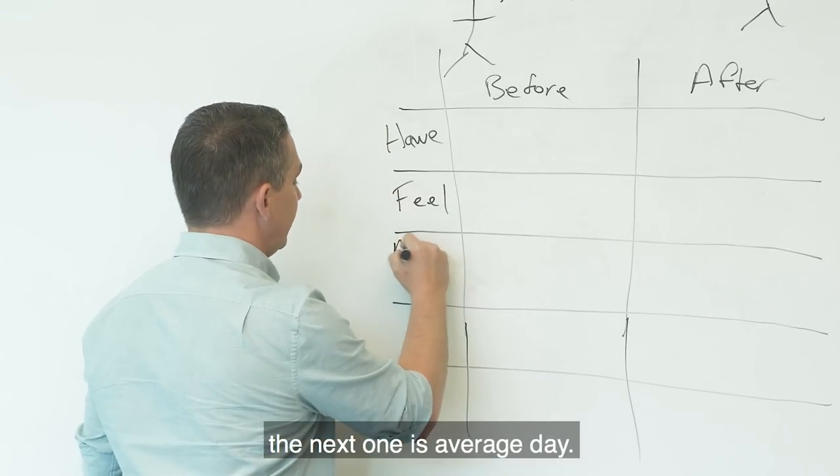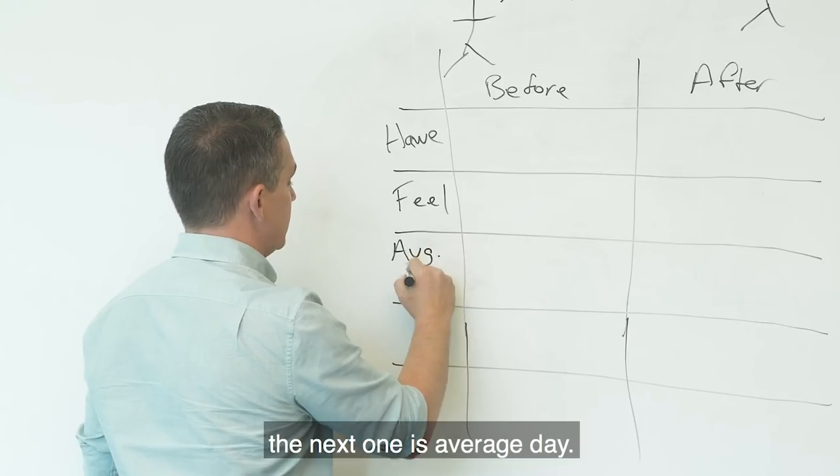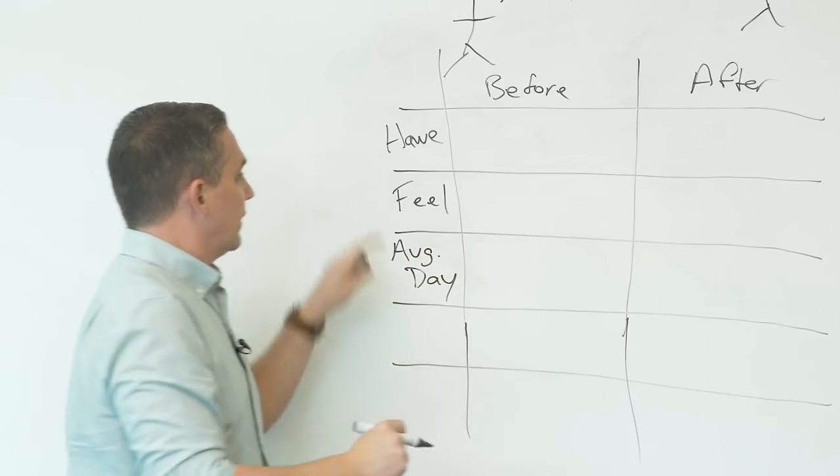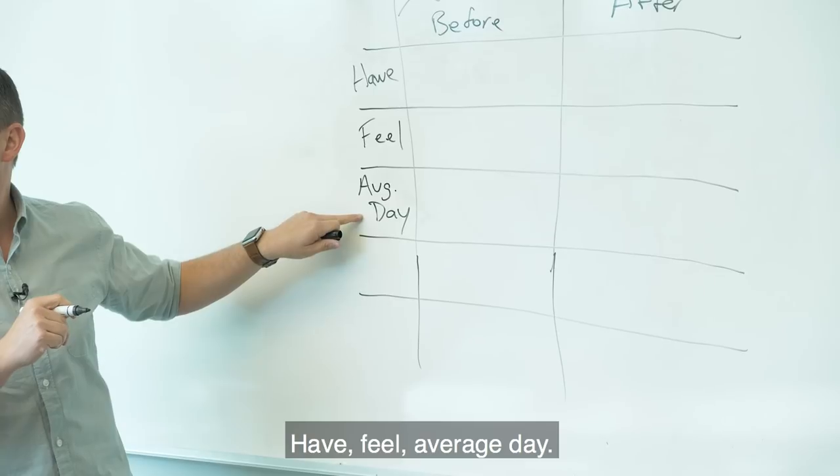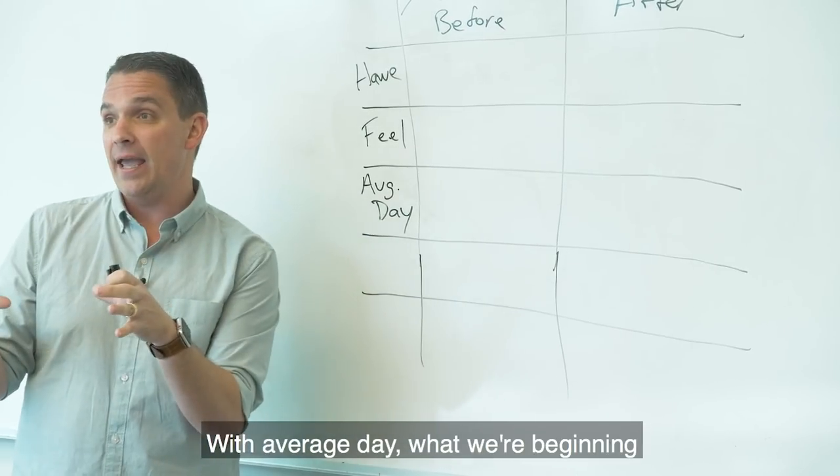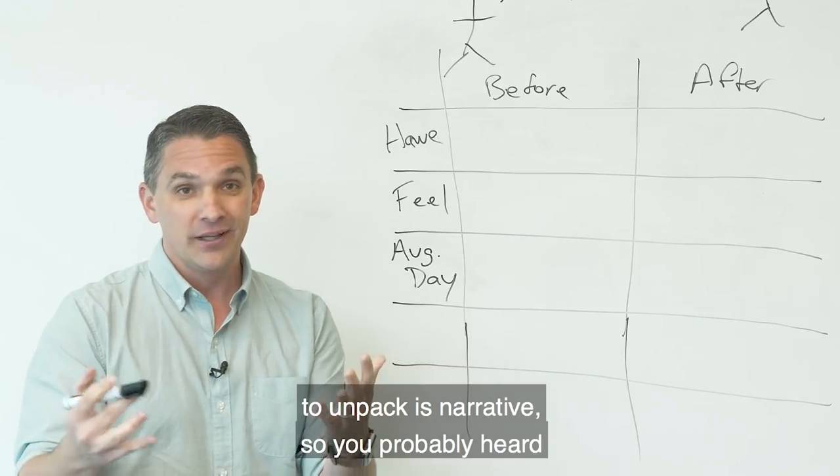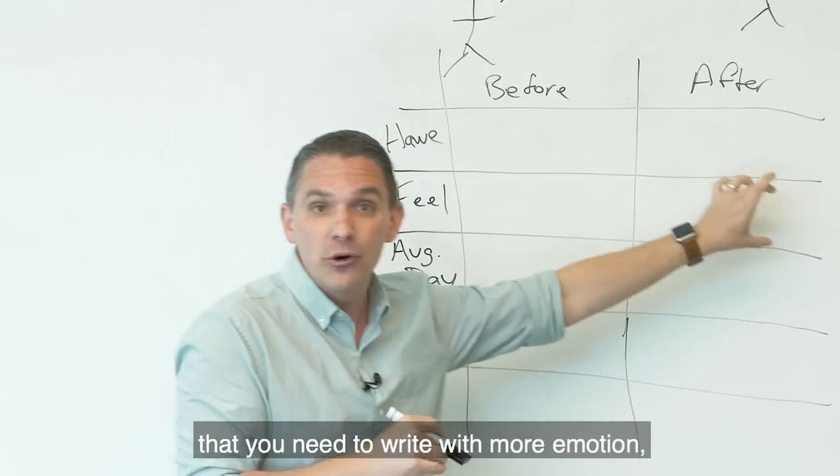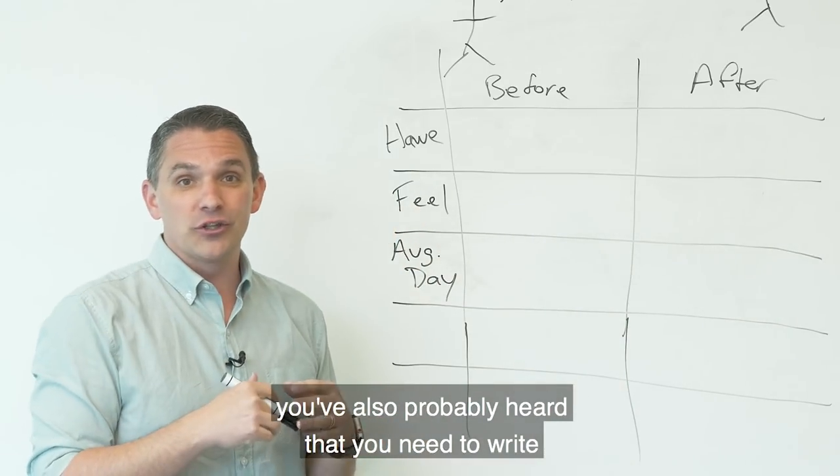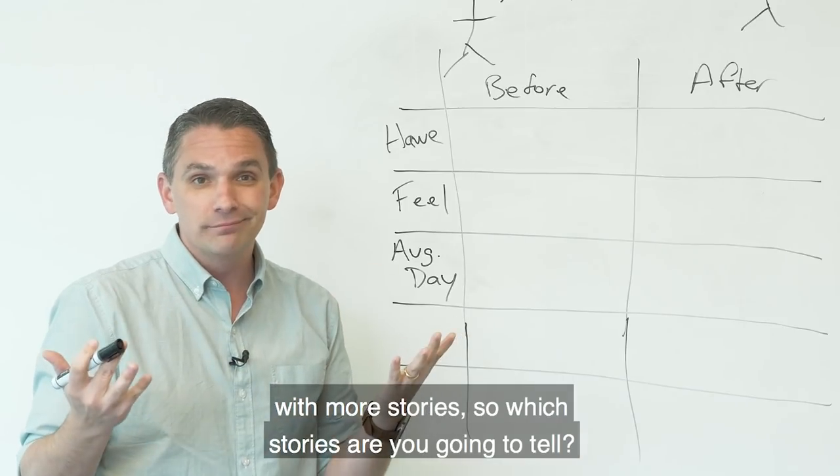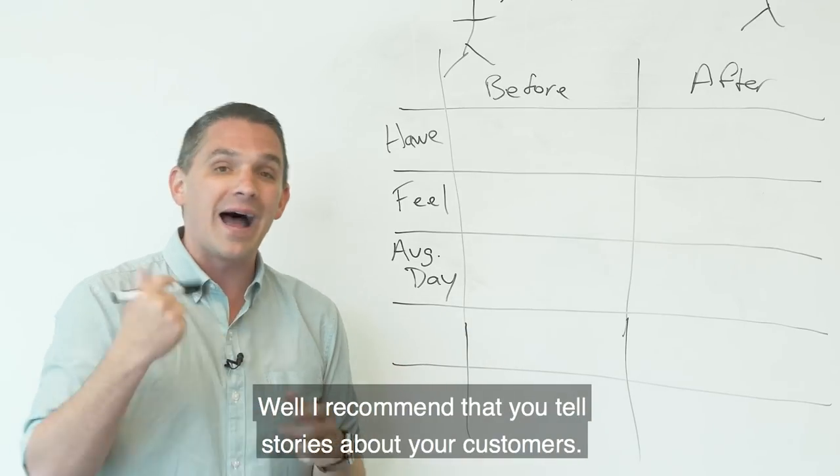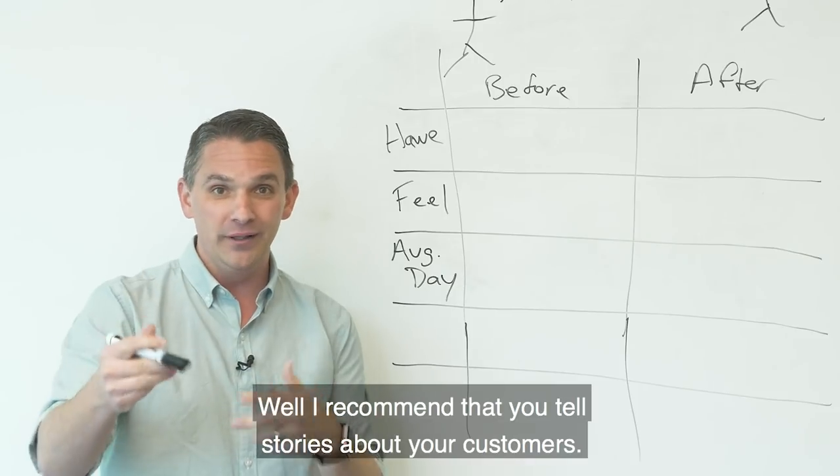The next one is average day. Have, feel, average day. With average day, what we're beginning to unpack is narrative. So you probably heard you need to learn to write with more emotion. You've also probably heard that you need to learn to write with more stories. So which stories are you going to tell? Well, I recommend that you tell stories about your customers.